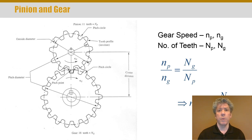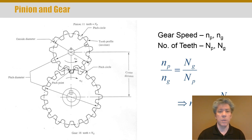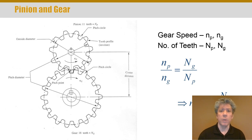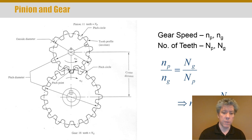The distance between the centers of the two gears is called the center distance, and where the two equivalent cylinders touch is called the pitch point. The gear here has 18 teeth, so capital N sub G is the number of teeth on the gear.